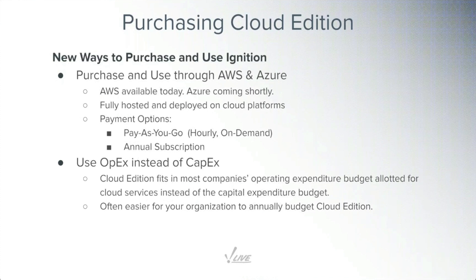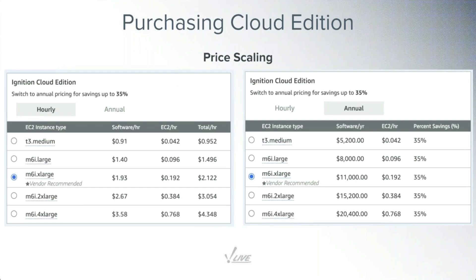OpEx generally refers to recurring types of payments for smaller amounts, whereas CapEx involves big capital expenditures. For a lot of organizations, this moves Ignition running in the cloud from being a big standard license up front to a smaller monthly payment that potentially comes out of a different budget. The actual pricing numbers shown here are for AWS, and the numbers inside Azure match this almost exactly — we're far enough along with Azure that I can say confidently you're going to hit very similar pricing there.